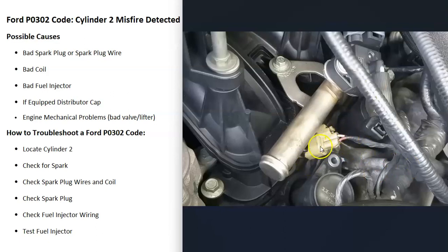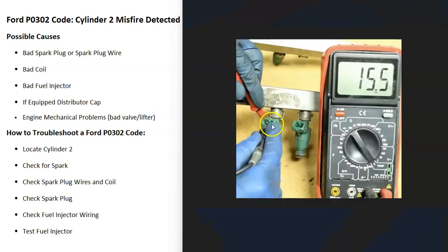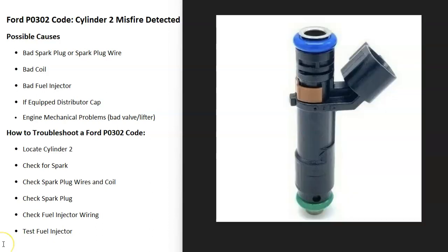There are several ways to test injectors. You can swap it with the one next to it and see if the problem follows. If you have a multimeter, you can test resistance in ohms — set the meter to ohms and compare the reading to a working injector on another cylinder. If the resistance is hugely different or you're getting nothing at all, that points to a bad injector. Injectors can also become clogged.